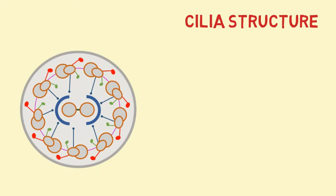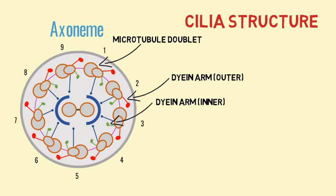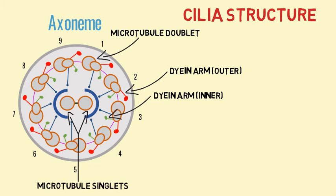Cilia is composed of 9 microtubule doublets forming a ring which is known as the axoneme. The protein dynein forms bridges to join the microtubule doublets to each other. In the center of this ring are two microtubule singlets. This arrangement is enclosed in a membrane.